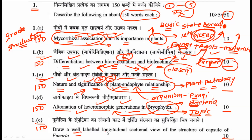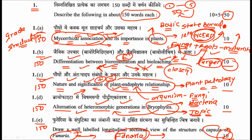The fifth sub-question asks you to draw a well-labeled longitudinal section of the capsule of Funaria. This is a simple question — by drawing the capsule and labeling it well, you will get the 10 marks.